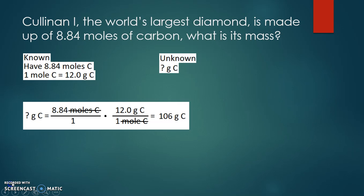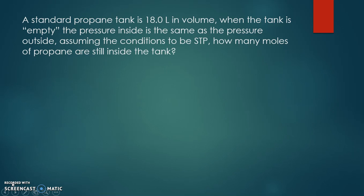We find that Cullinan One has 106 grams of carbon. Next, we have a standard propane tank with a volume of 18.0 liters. The tank is considered empty because the pressure inside equals the pressure outside, so no more gas diffuses out — but there is still some propane remaining inside.